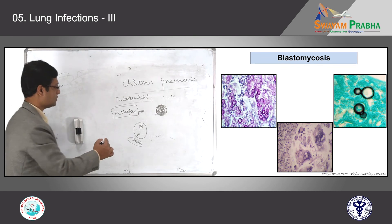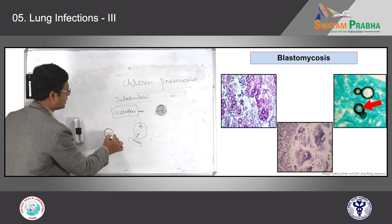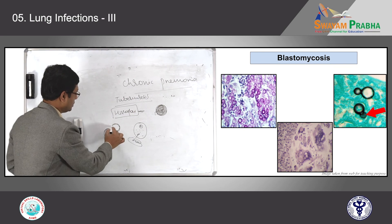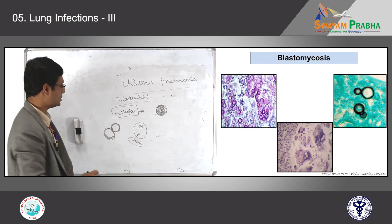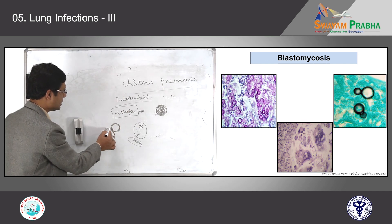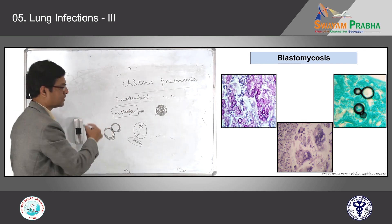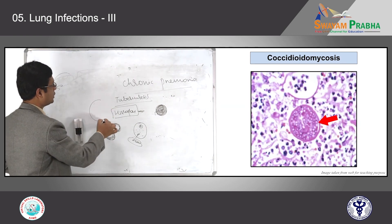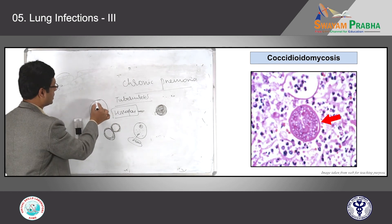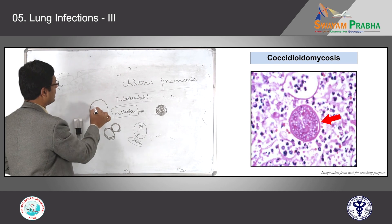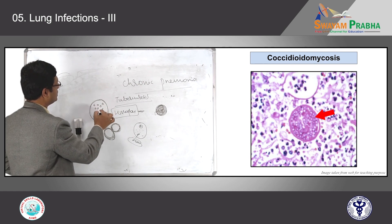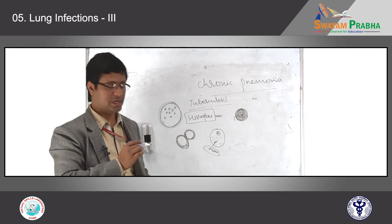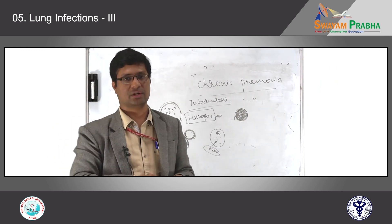For blastomycosis, you will see a thick-walled fungus with a budding form — that is how blastomycosis looks. Coccidioidomycosis will have a large spherule-like organism with a thick double wall, and you will see small microspherules inside the large organism — this is how coccidioidomycosis looks under microscopy. This completes the lung infection lecture. Thank you.